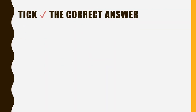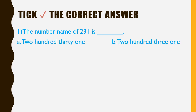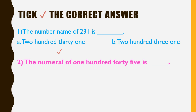Pick the correct answer. The number name of 231 is: option A — two hundred and thirty-one, or option B — two hundred and three. Which answer is correct? Yes, two hundred and thirty-one is correct. Next: the numeral for one hundred and forty-five is: option A — 1405, or option B — 145. Which option is correct? Yes, option B: 145.